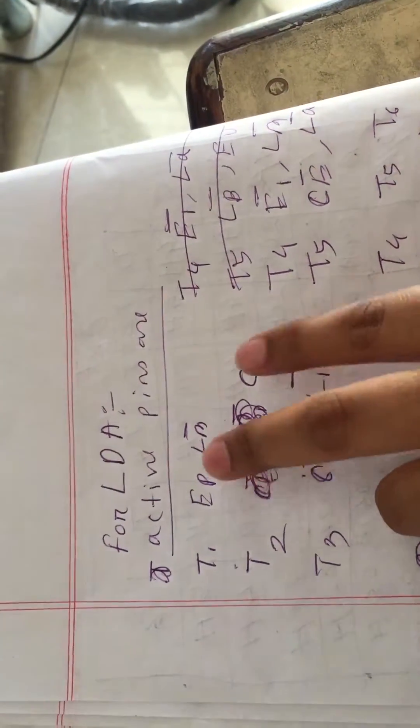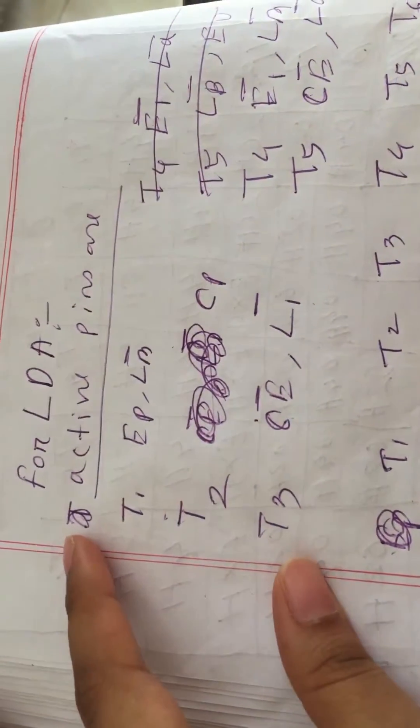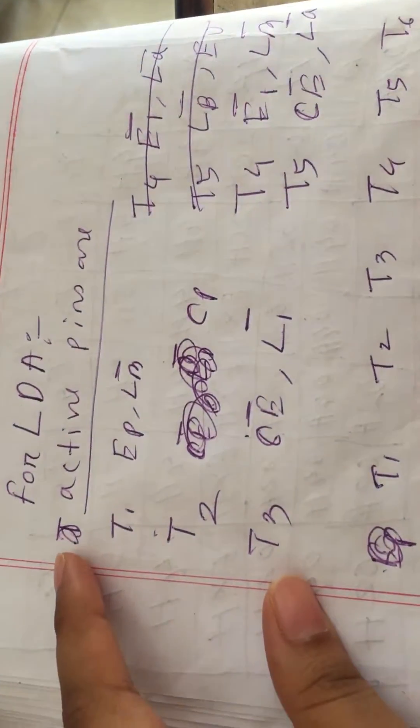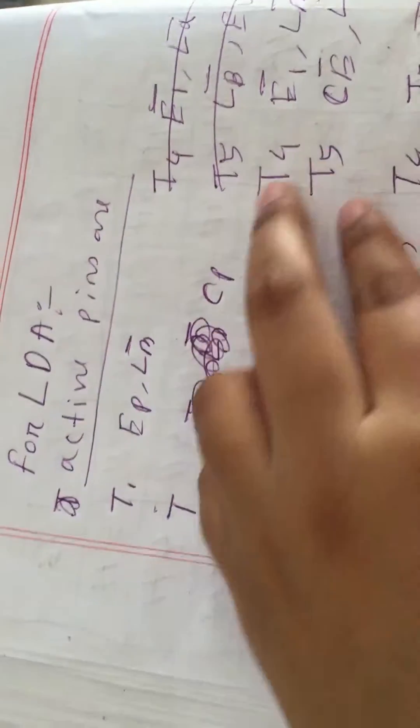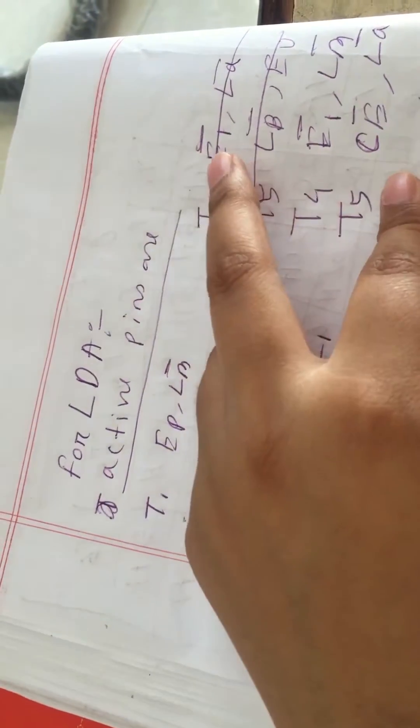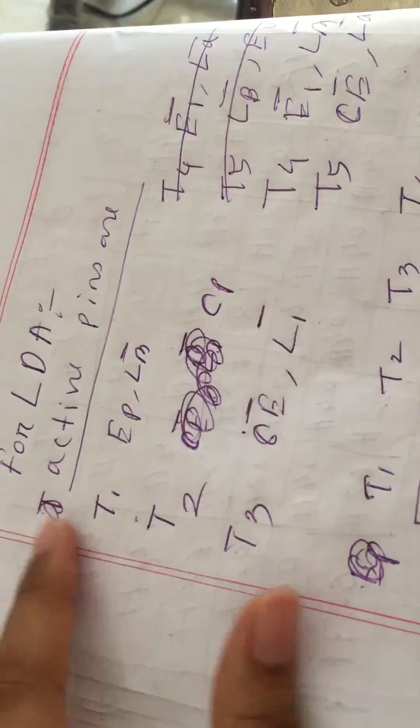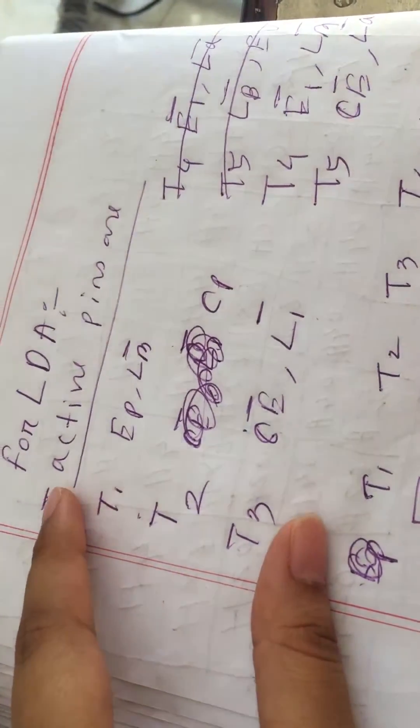For the load cycle, the active pins were this, like in my diagram I showed you for T4, T5, T6 cycle, right? T4, T5, T6 cycles where the active pins were this and T6 were none, okay?